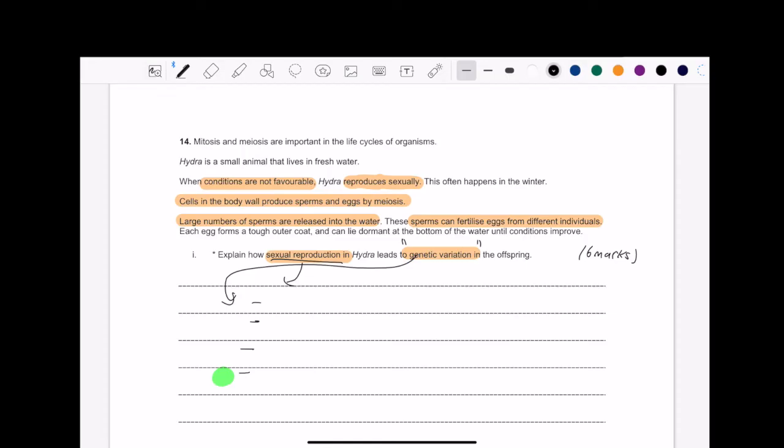Now it says explain how, what does how mean? How is like an instruction, so how does this happen? So that's when you get into the specifics of meiosis. Of course, you know that meiosis produces unique gametes. Why is that? Tap into it. So we have crossing over. That was in the prophase one.